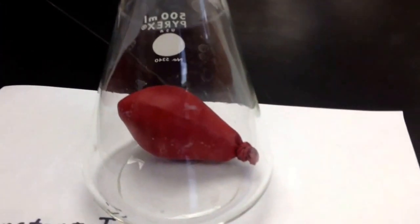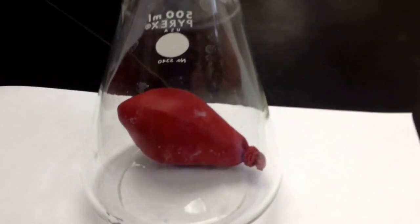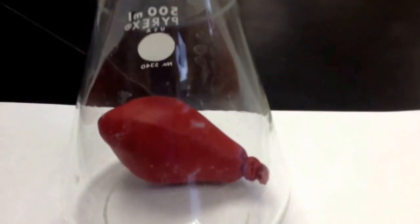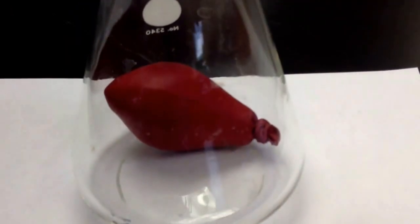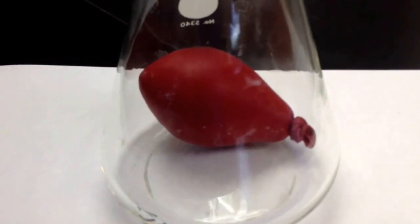When you turn on a vacuum, what happens? You decrease the pressure. So I am going to turn on my vacuum here and the pressure is going to decrease. If Boyle's law is correct, my volume should increase. So I am decreasing my pressure.